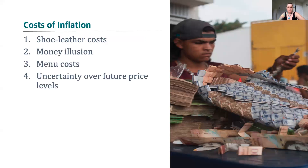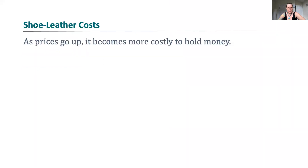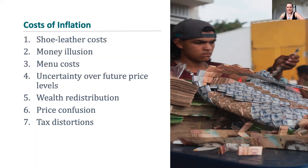Here's a master list that we're looking at: shoe leather costs, money illusion, menu costs, uncertainty about future price levels, wealth redistribution, price confusion, and tax distortions.